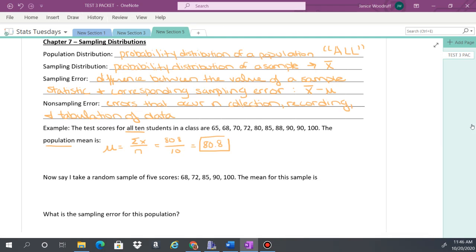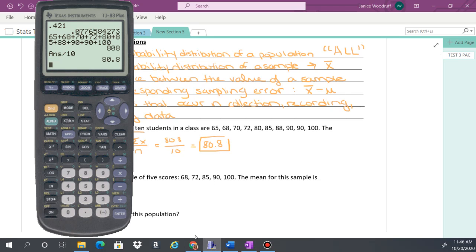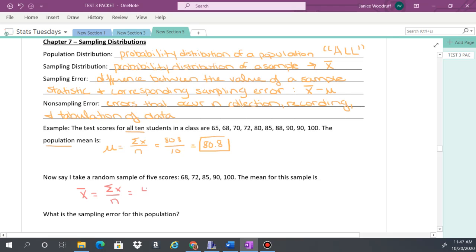Now let's say I take a random sample of five of the scores from this population. So now it's a sample. What's the mean for the sample? It's still the same formula, except instead of mu we write x bar. But it's still the sum of x divided by n. So 68 plus 72, 85, 90, and 100. That's 415 divided by 5, because there's only five values, which gives you 83.